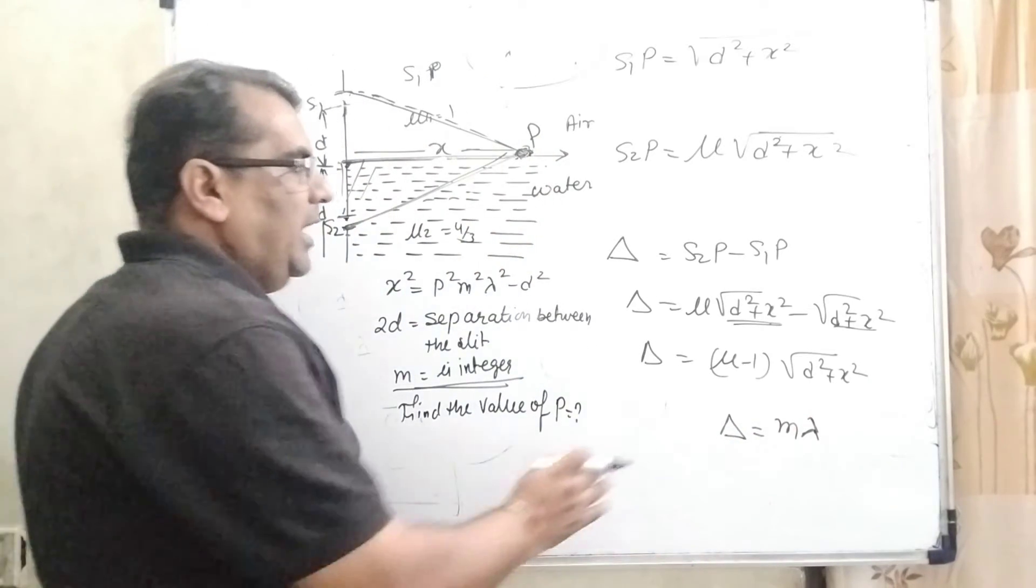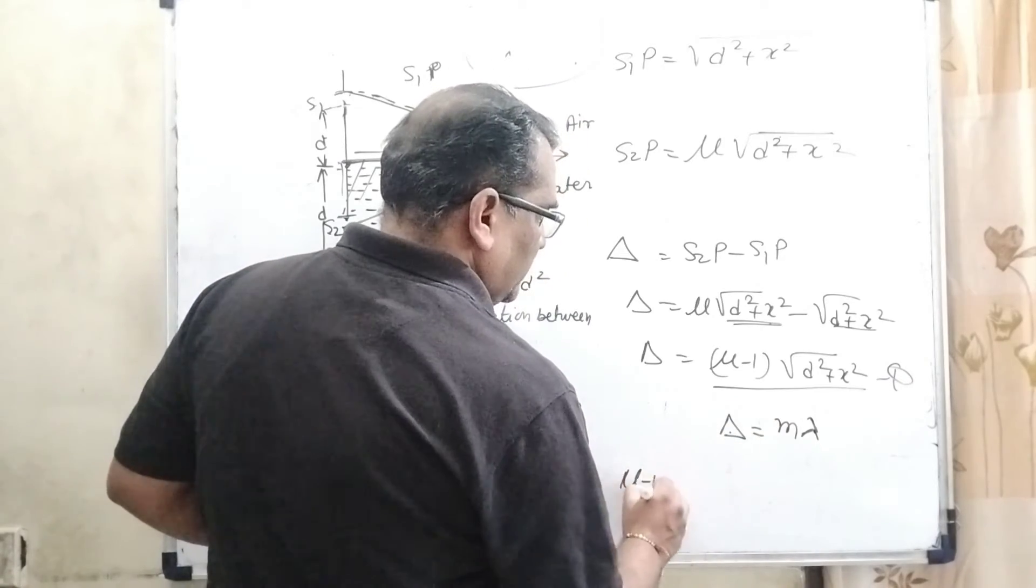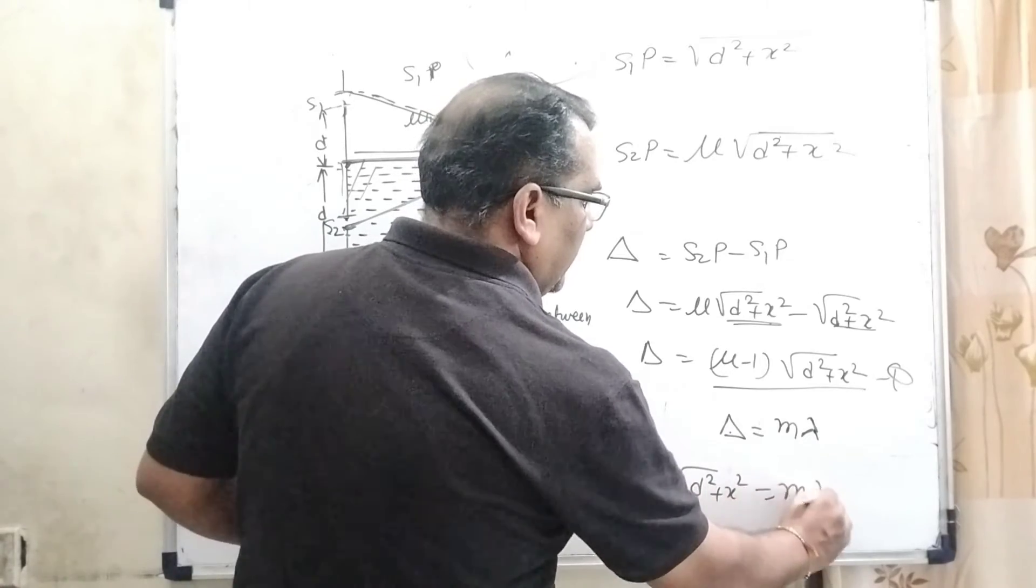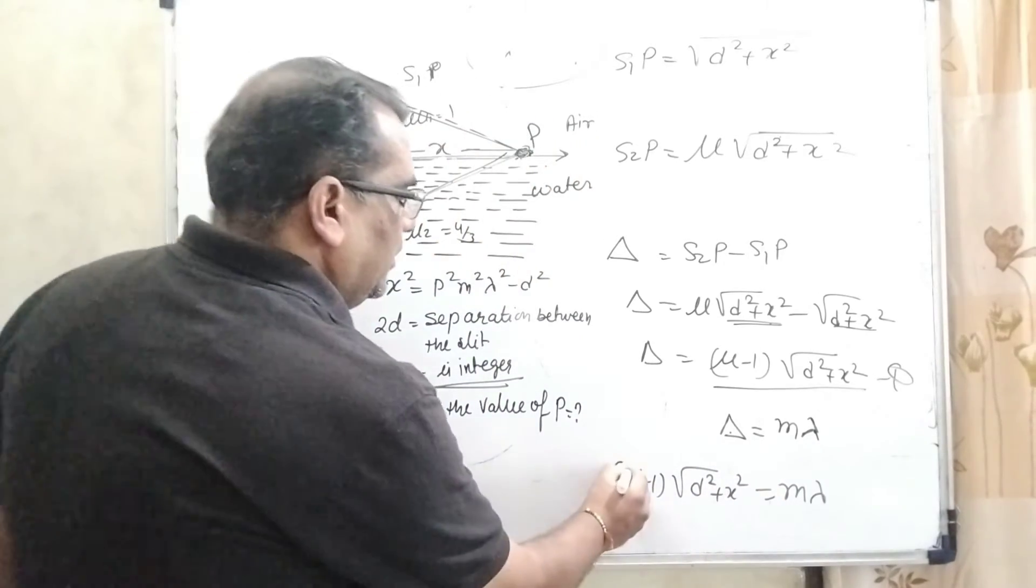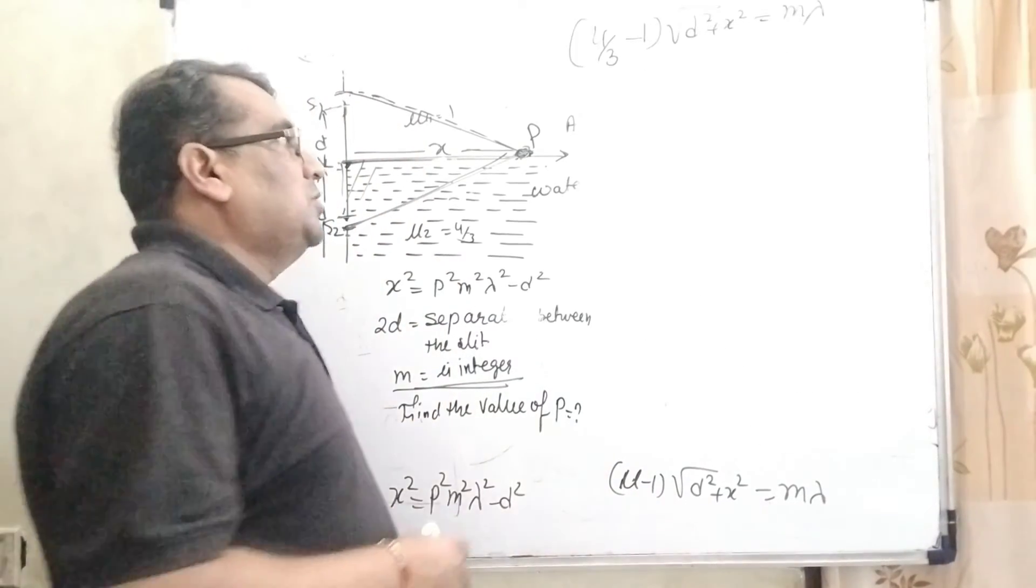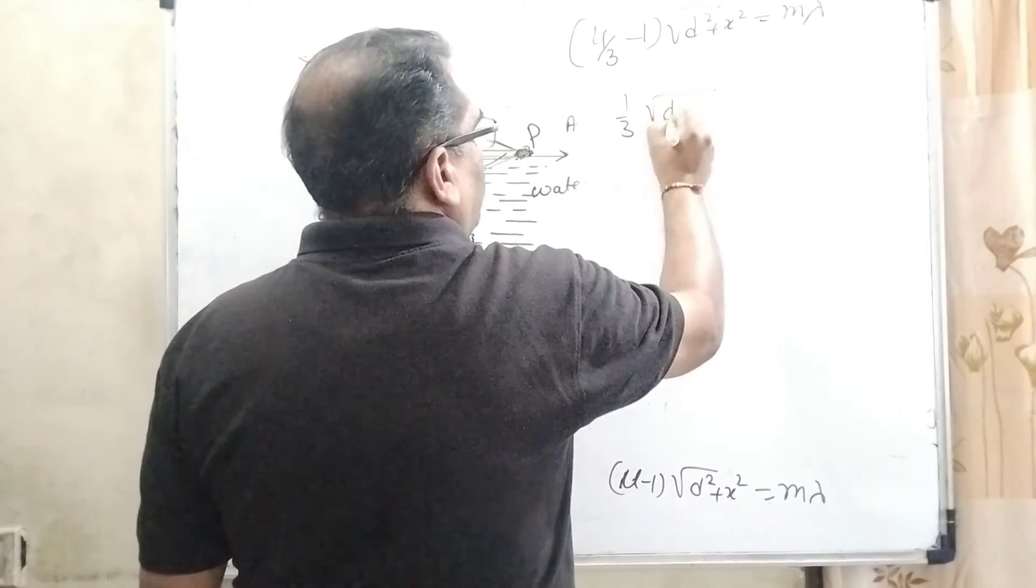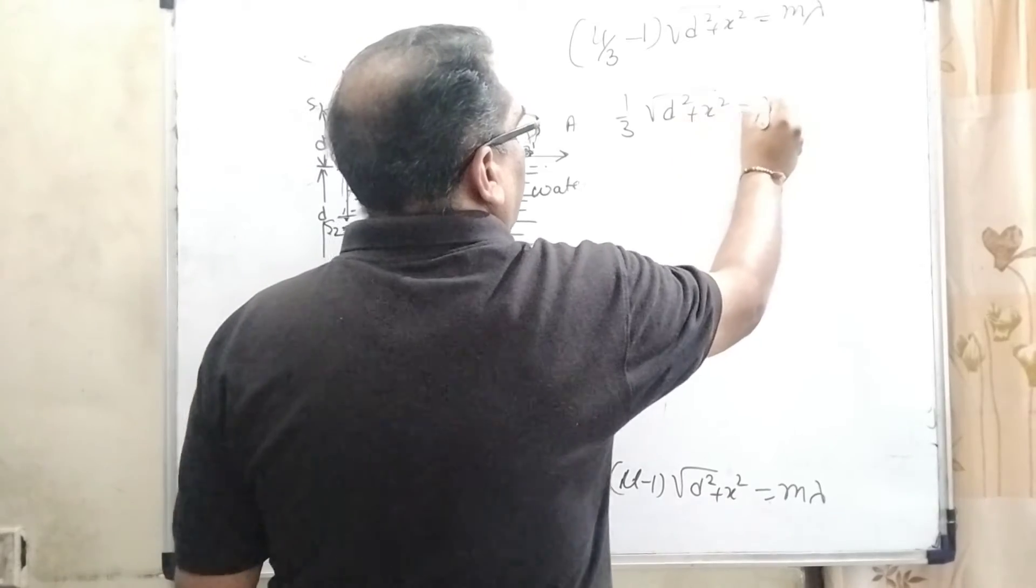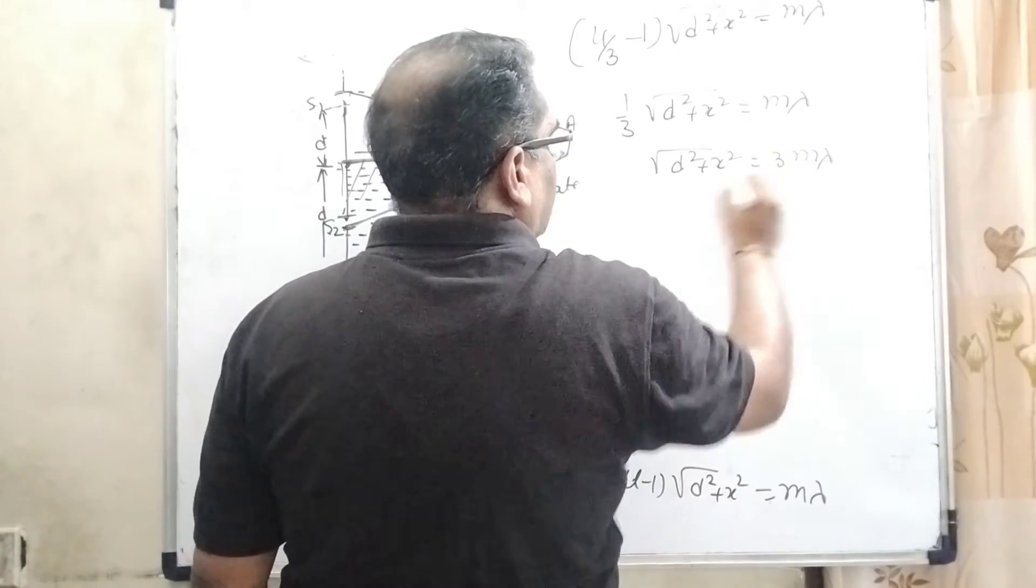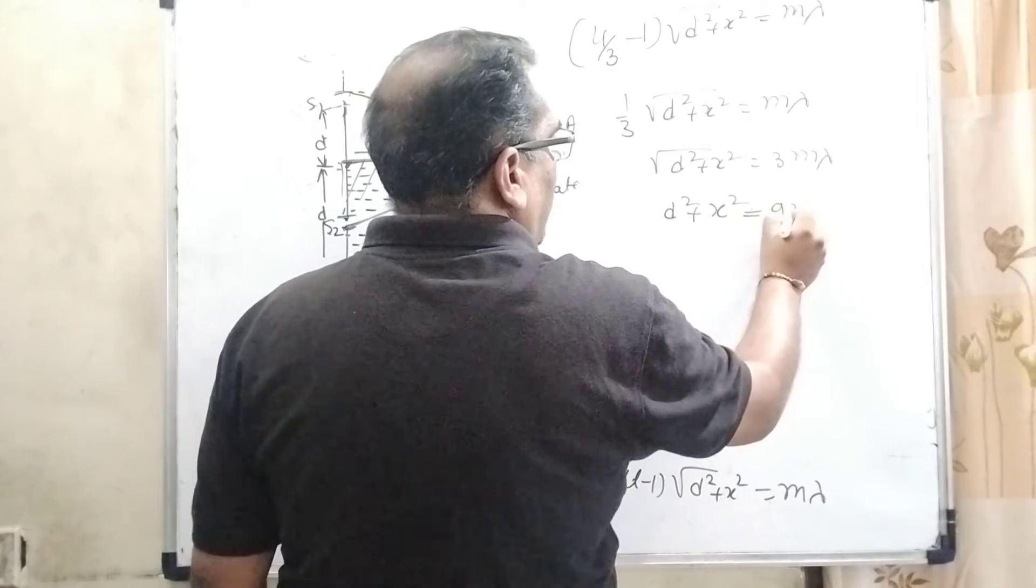Now substitute this value for path difference: (μ - 1)√(d² + x²) = mλ. The μ of water is 4/3. Substituting: (4/3 - 1) = 1/3, so (1/3)√(d² + x²) = mλ. Squaring both sides: d² + x² = 9m²λ².